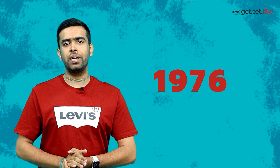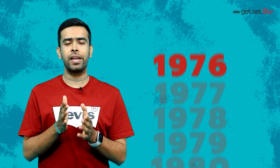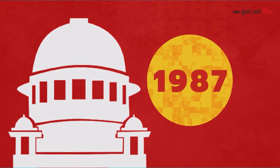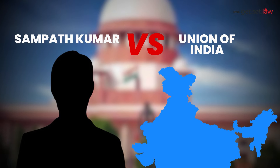Now, this amendment came in 1976, but just 11 years later, in 1987, for the first time, a petition went to the Supreme Court reporting that these administrative tribunals were not able to conduct their procedure impartially or independently. So for the very first time, the Supreme Court, in the case of Sampat Kumar vs. Union of India, declared that it is significant for these administrative tribunals to work independently and impartially.